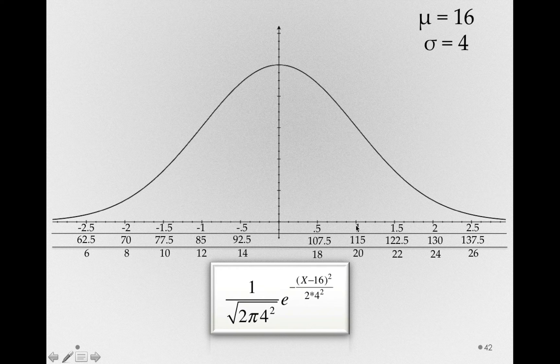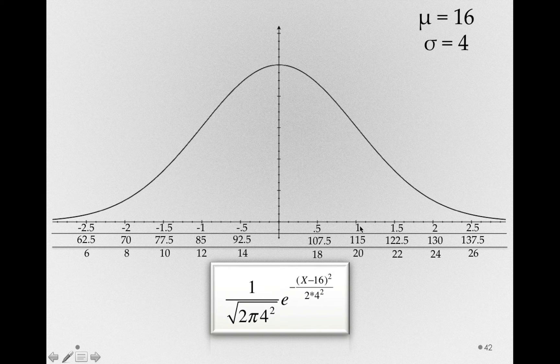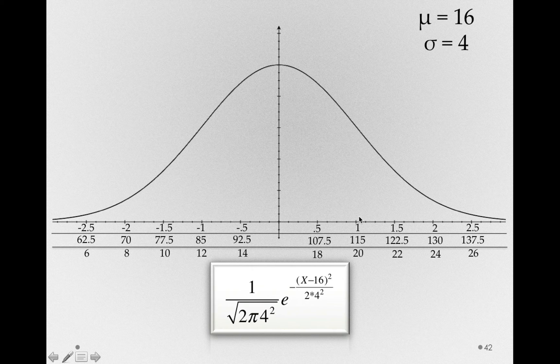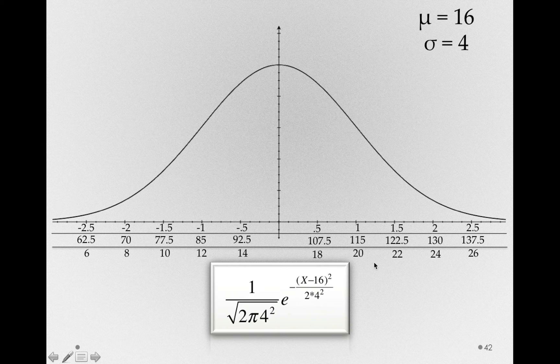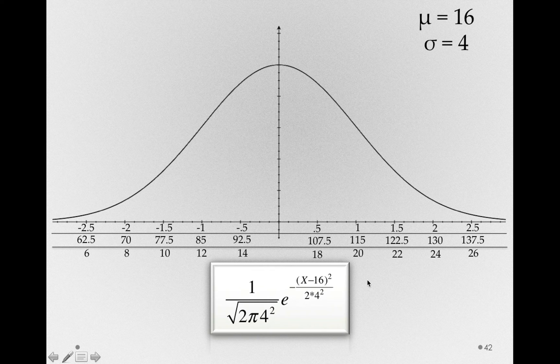So me asking the question, what proportion is beyond a z-score of 1, is the same thing as saying, beyond a value of 115 on an IQ distribution, or beyond a value of 20 on the BDI distribution. They're all identical.